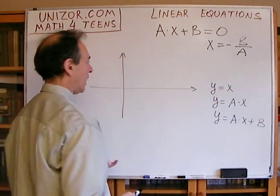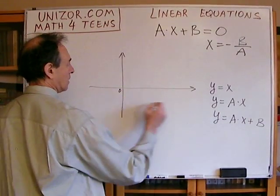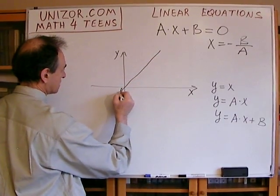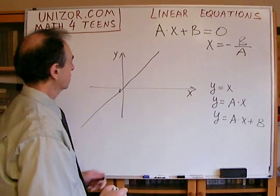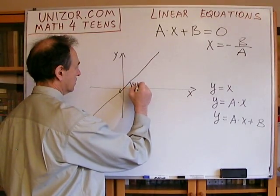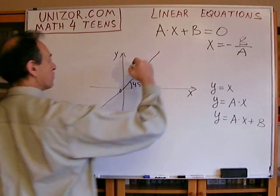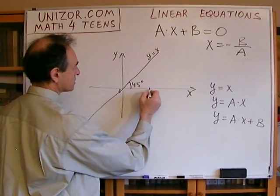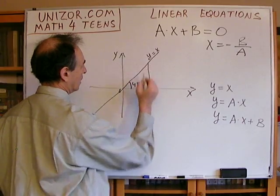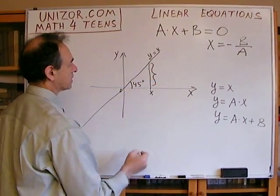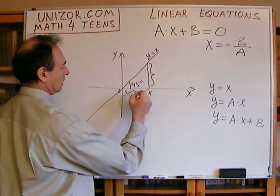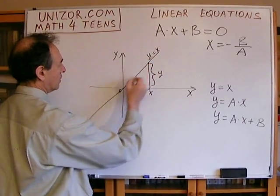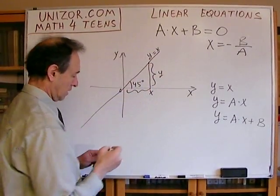Y equals x — everybody knows what that is. This is the line which bisects the straight angle at 45 degrees. Because for every x, if I go up, the vertical length is exactly the same as the horizontal length. If this length is x and this length is y, then y is equal to x. So for every point on this line, that is an obvious property.